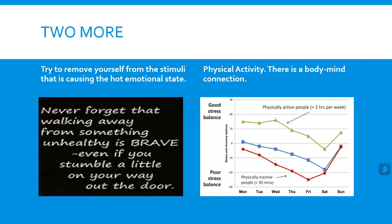Try to remove yourself from the stimuli that is causing the hot emotional state. I know that's not always possible, especially in a school setting, but oftentimes a student in a heightened emotional state may ask to take a walk, go to the water fountain to cool down, or talk to a different teacher. Never forget that walking away from something unhealthy is brave, even if you stumble a little on your way out the door. Removing yourself from what's putting you in a hot emotional state can bring you to a cool emotional state.